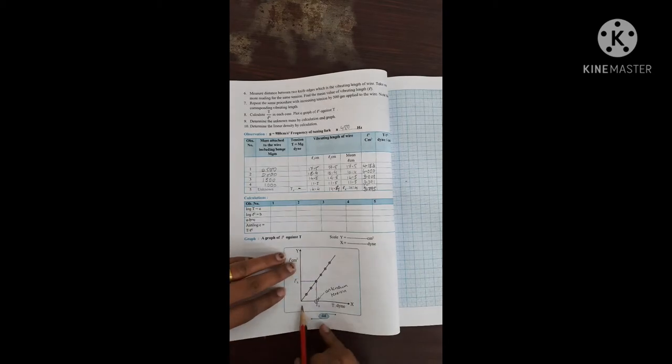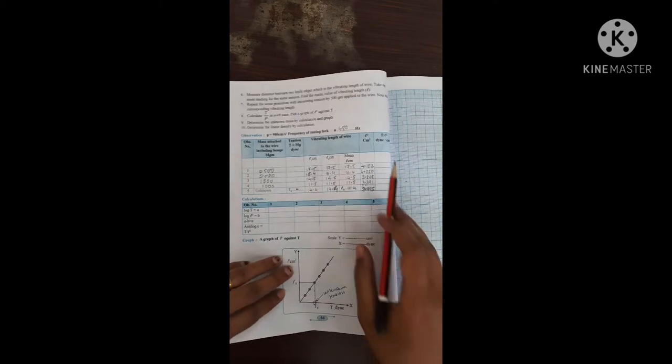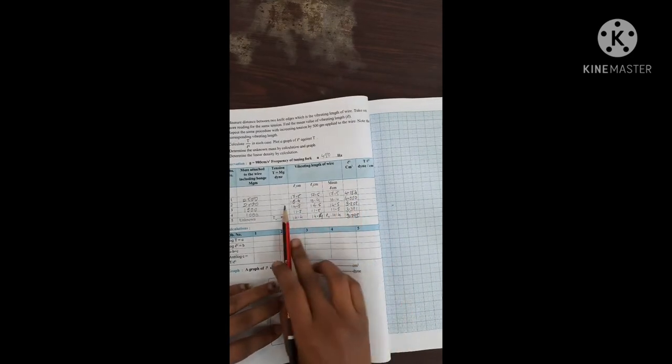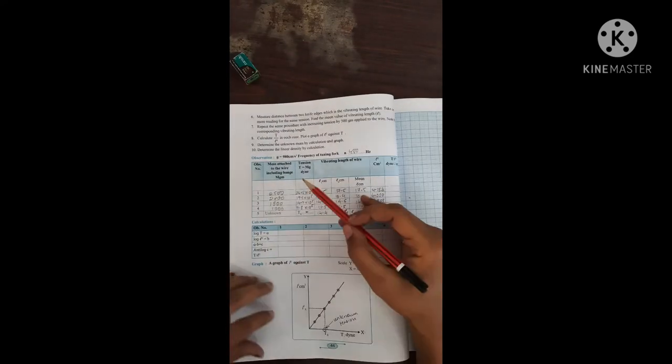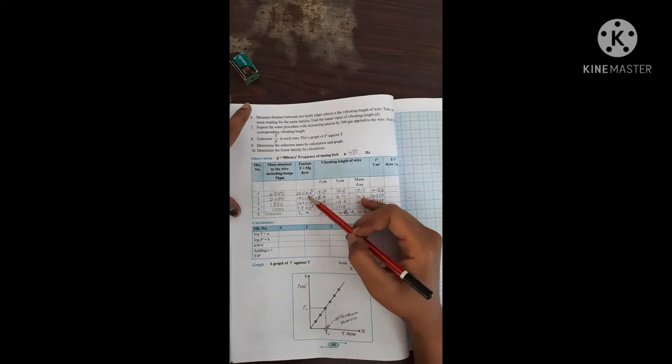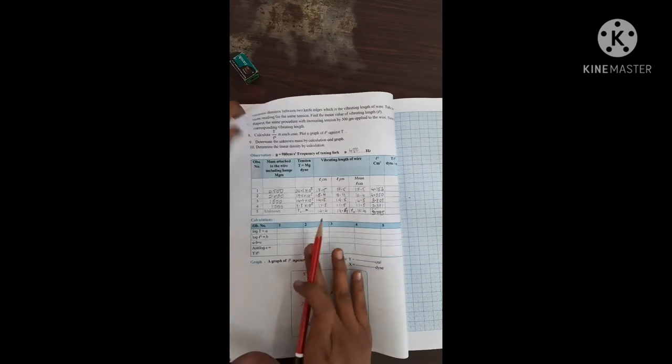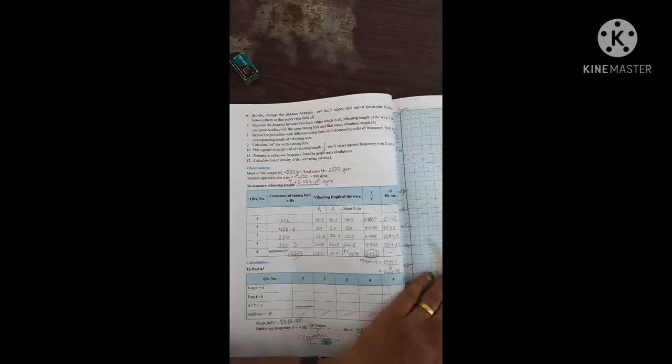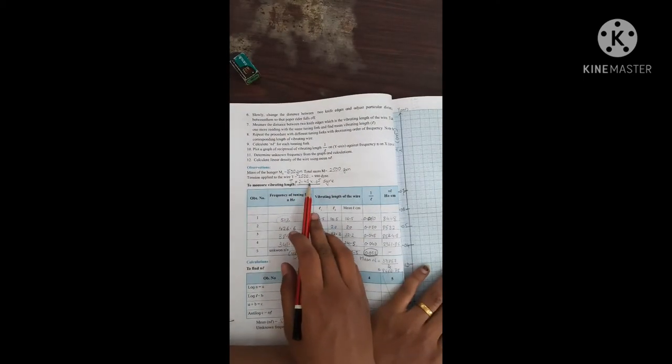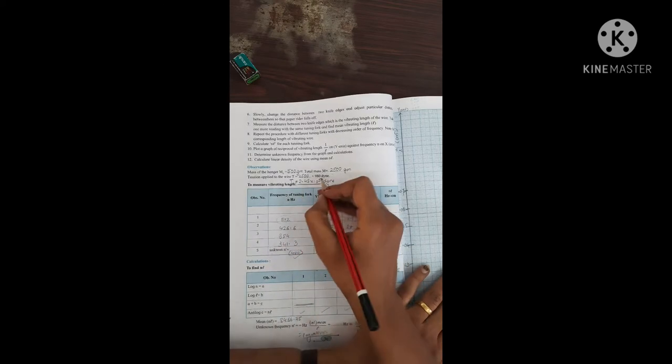See, x-axis we have taken the tension, so write it in terms of power, in terms of 10 to the power 5, so that it will be easy for plotting. This is the homework for you. Now see, I have done the calculation.